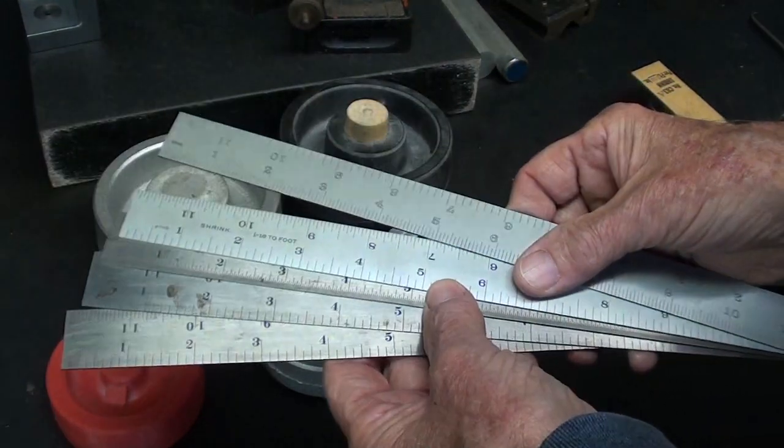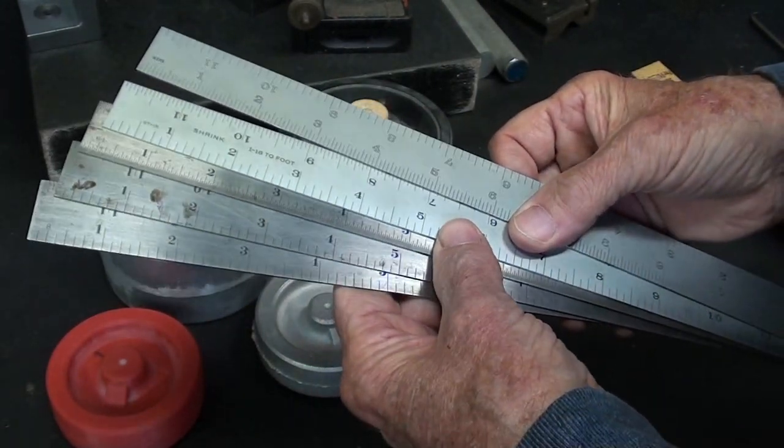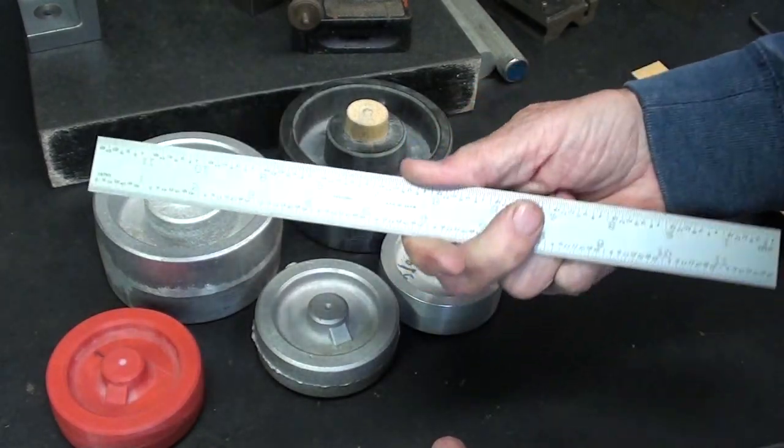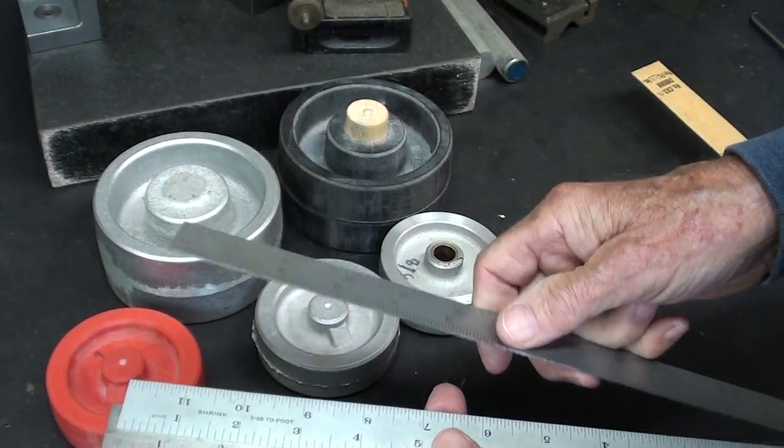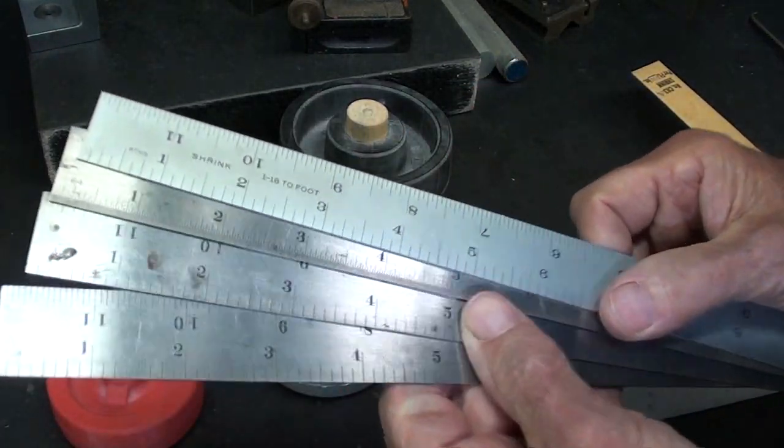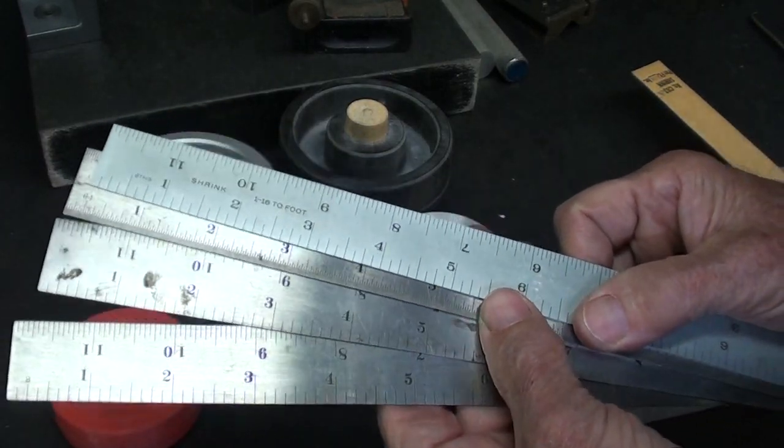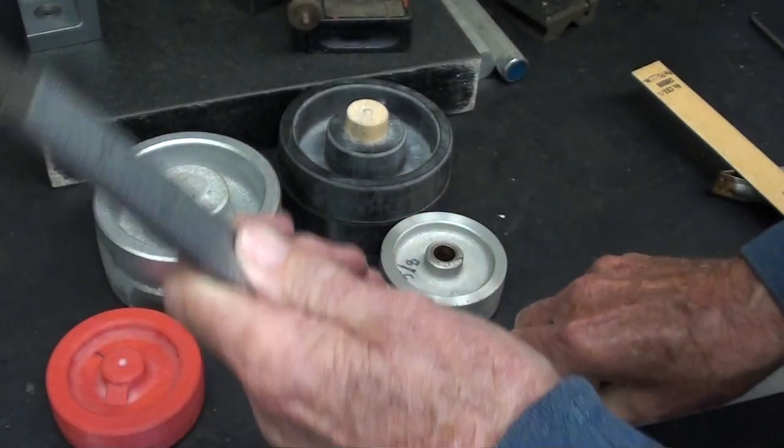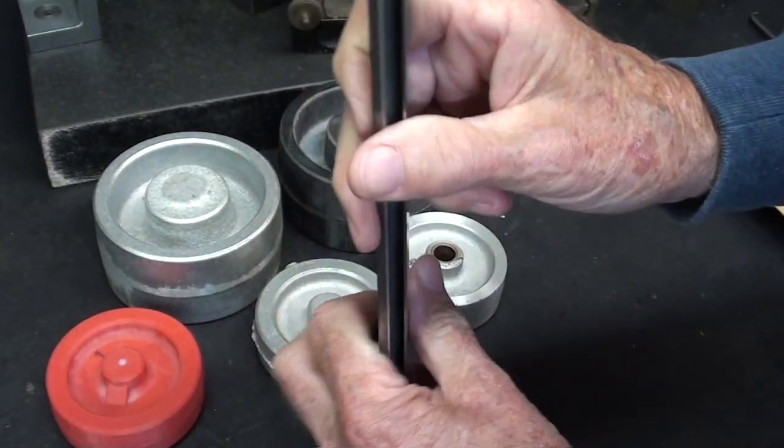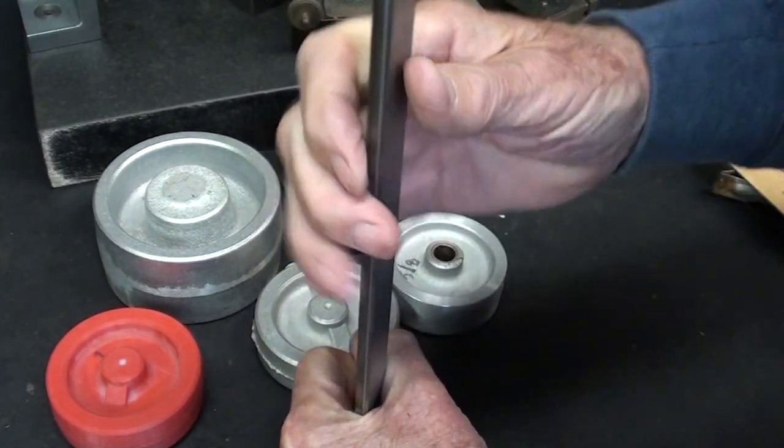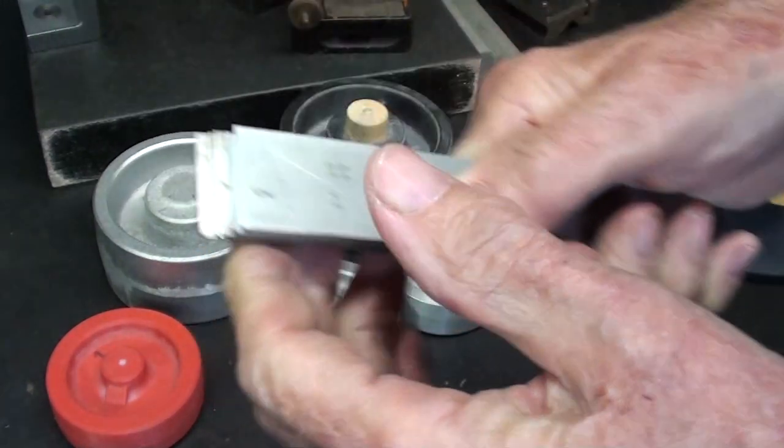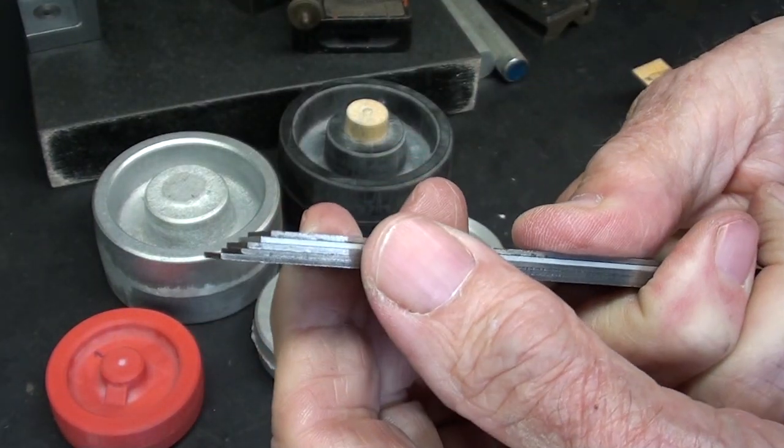Rules is correct, admittedly. Alright, this rule here is a 12 inch regular ruler. It's not a shrink rule. And here we have four more shrink rules, and each one is a slightly different shrink rate. So let me stack these like this, tapping them down so that they are even on this end. But look, they are all different lengths.